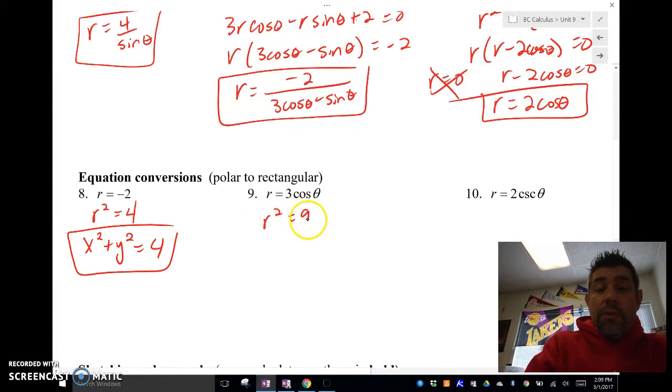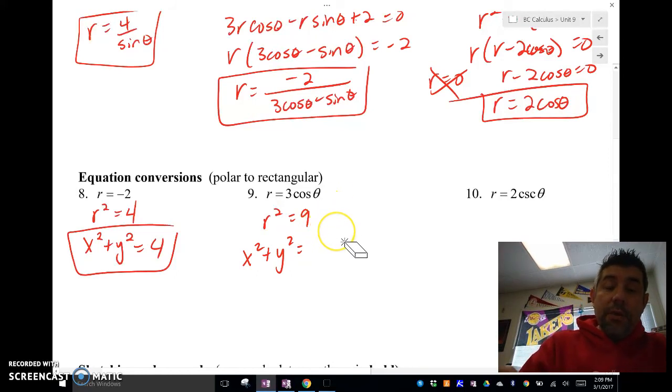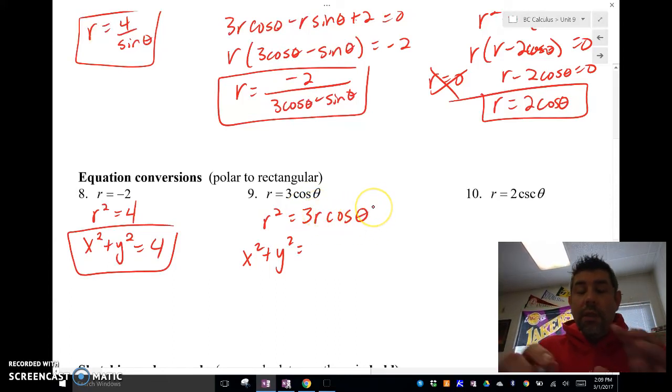Again, here I'm going to square r. So I'm going to have 9 cos²(θ). Oops, I forgot—it's not squared. I'm not squaring both sides, I'm multiplying both sides by r. It's a little bit different. And the reason I want to do that is because r cos(θ), I know that is going to be x.